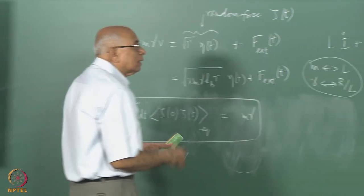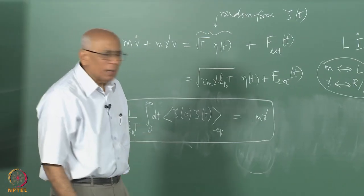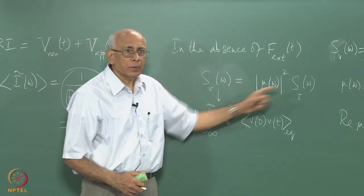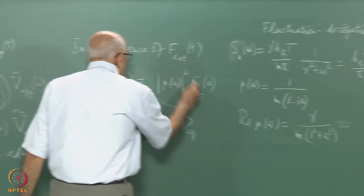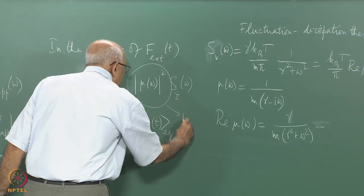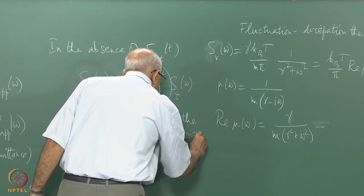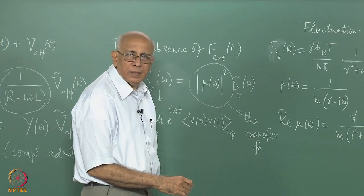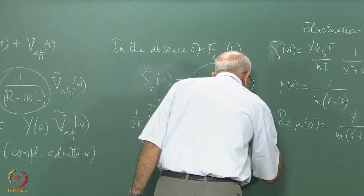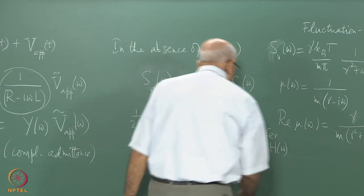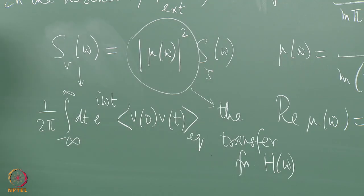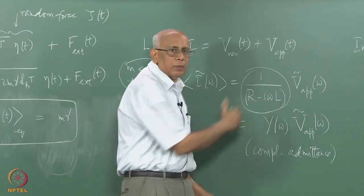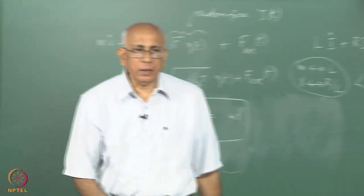The term fluctuation-dissipation theorem is sometimes used interchangeably, and we know that the two power spectra are connected through this relationship. This quantity in engineering would be called the transfer function H(ω) — the modulus squared, 1 over (R² + ω²L²), is the transfer function for an LR circuit.